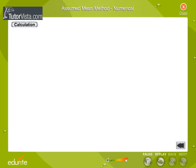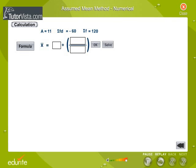Click on the Calculation button. Use the formula button to know the formula for mean. Now enter the values in the respective boxes and calculate the value of the mean.